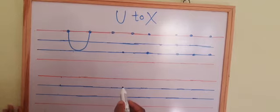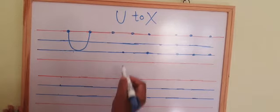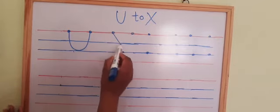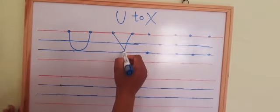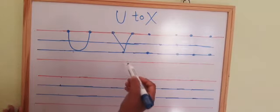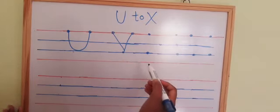And next letter, we will make V. First, we will make slanting line. One more slanting line. This is letter V. V says Van. V says Van.